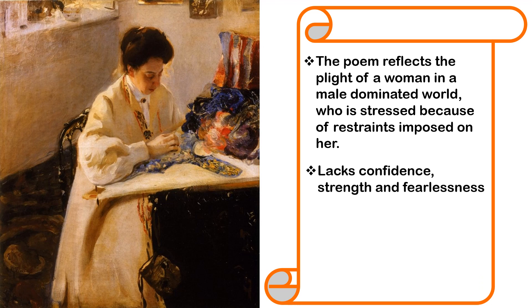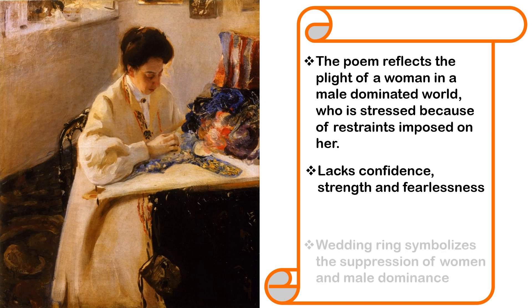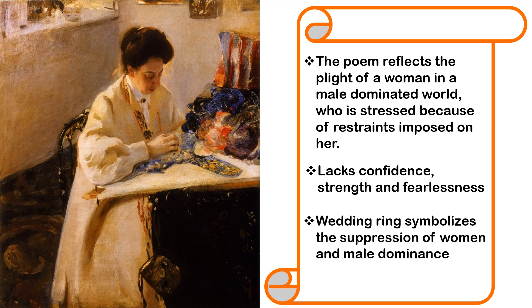She lacks confidence, strength and fearlessness, and lacks inner conviction unlike the tigers she portrays. The wedding ring on her hand is a constant reminder that she belongs to her husband. Even after her death, the ring will remain on her hand and she will never be free. On the other hand, the tigers she is embroidering will continue to move around freely forever. Her desire for freedom and fearlessness will live on through her tigers.